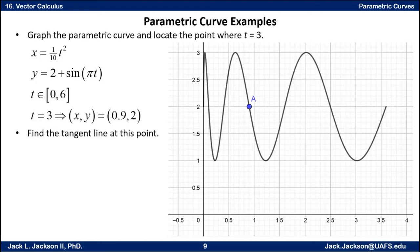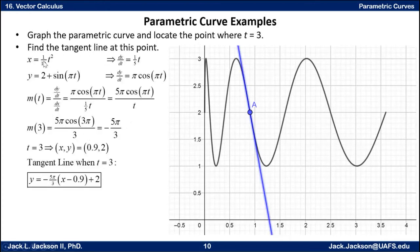Now let's see if we can find the tangent line to the curve at that point. See if you can do it on your own. The first thing we want to do is find the derivatives of Y and X in terms of T. We take the derivative of X with respect to T, that's x prime of T or dx/dt. This is just a power function. 2 times one-tenth is one-fifth, the power goes down one, so that's just one-fifth T. And dy/dt or y prime of T is the derivative of 2 is 0, the derivative of sine of pi T is cosine of pi T times the derivative of pi T, which is π. So we use the chain rule there.